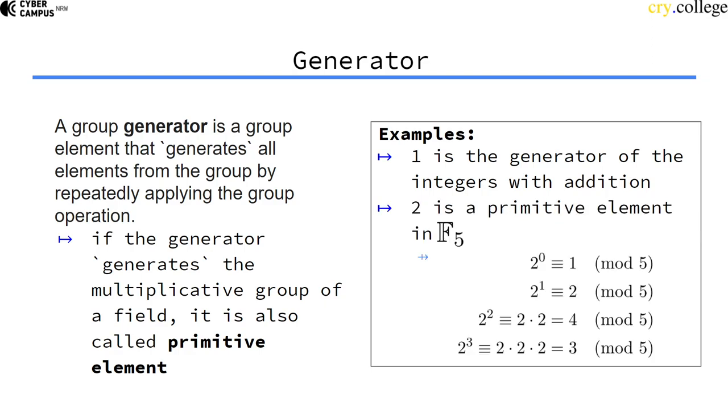In the finite field F5, all numbers modulo 5, remember it's a field because 5 is a prime number. Two is a primitive element.